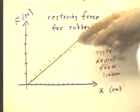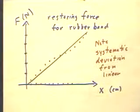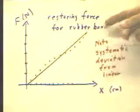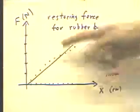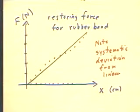However, it's close enough to linear that we're going to use it and pretend that it's pretty much linear. So we have force versus x, restoring force versus displacement, and we have a best fit straight line.